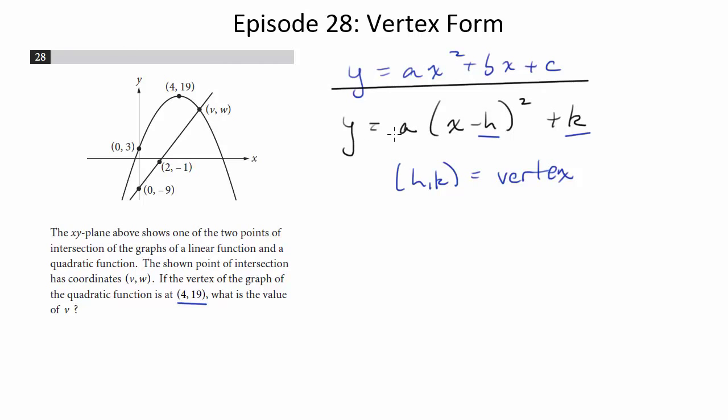So let us then plug in our points. So y is equal to a times (x minus 4) squared plus 19. Next, we need to find this a. So to do that, we need to find another point to plug in for x and y, so that we can find the value of a.